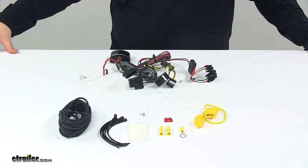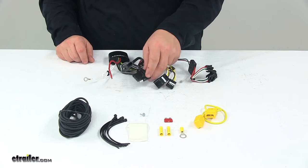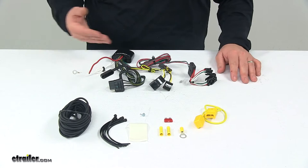Today, we're taking a look at a T1 vehicle wiring harness with a four-pole flat trailer connector. This product fits certain years of the Scion XB, so to ensure that this is a fit for your vehicle, you can use the vehicle fit guide located at eTrailer.com.